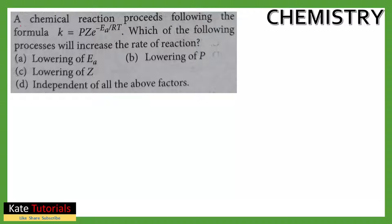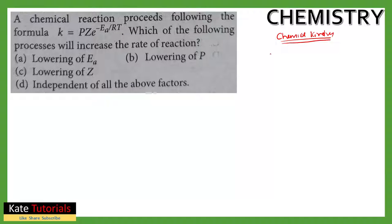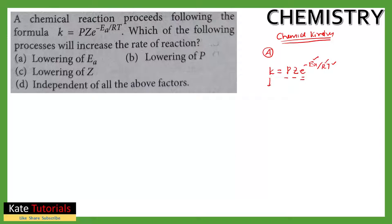Welcome to this question. A chemical reaction proceeds following the formula k equals a given equation — which of the following processes will increase the rate of reaction? This question is from chemical kinetics, a chapter where you will read about the Arrhenius equation: k = p·z·e^(-Ea/RT). Here, Ea is activation energy, R is the gas constant, T is temperature, p and z are constants, e is the exponential function, and k is the rate constant.